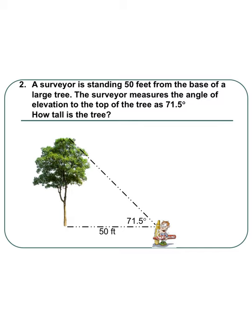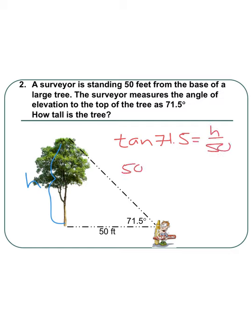A surveyor standing 50 feet from the base of a large tree measures the angle of elevation to the top of the tree to be 71.5 degrees. We want to find the height h of the tree. Since h is opposite the angle and 50 feet is adjacent, we use the tangent function: tangent(71.5°) = h over 50, so h = 50 × tangent(71.5°). Using a calculator in degree mode, we get approximately 149.4 feet as the height of the tree.